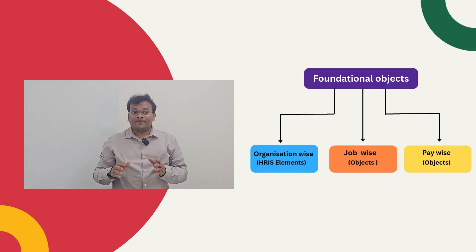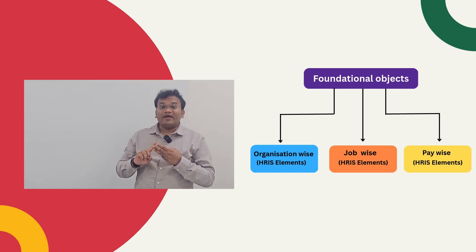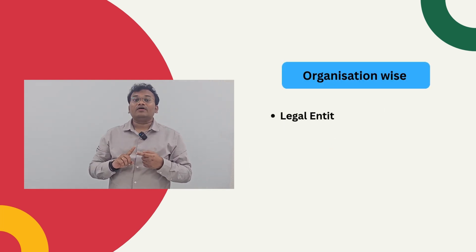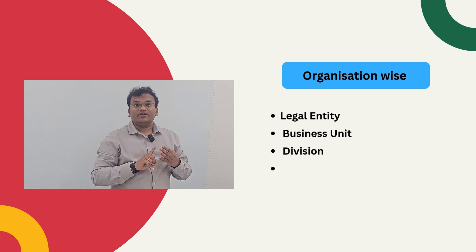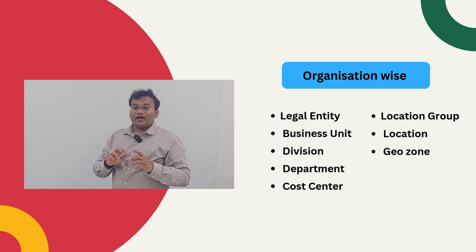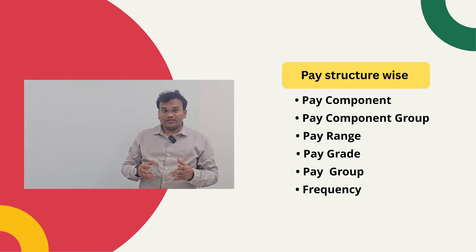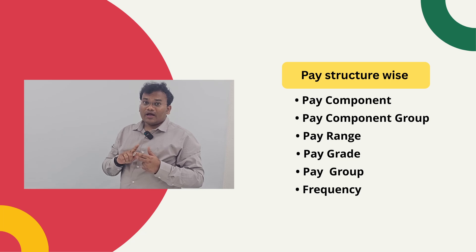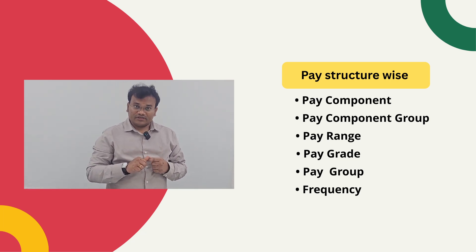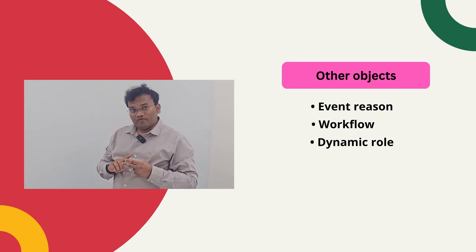In foundation objects, we have HR elements organized by category. Organization-wise: legal entity, business unit, division, department, cost center, location group, location, and zone. Job structure-wise: job function and job classification. Pay structure-wise: pay component, pay component group, pay range, pay grade, pay group, and frequency. Additionally, other objects include event reasons, workflows, and dynamic roles.